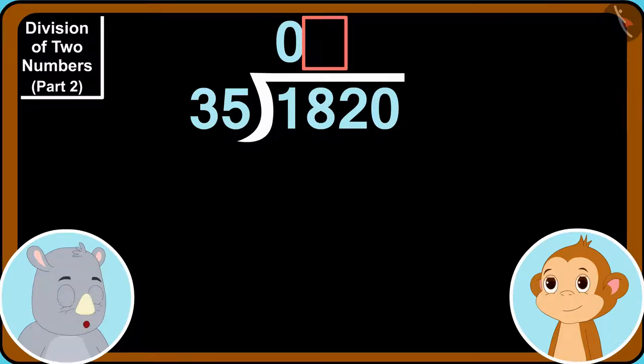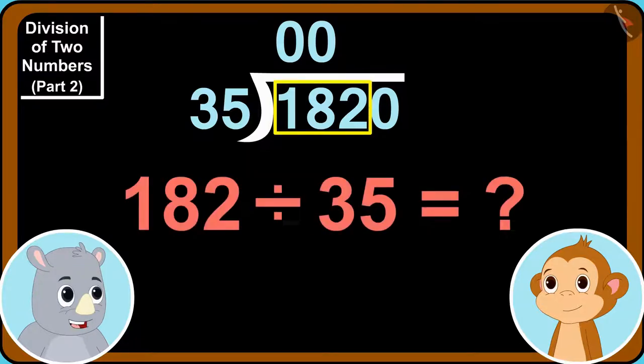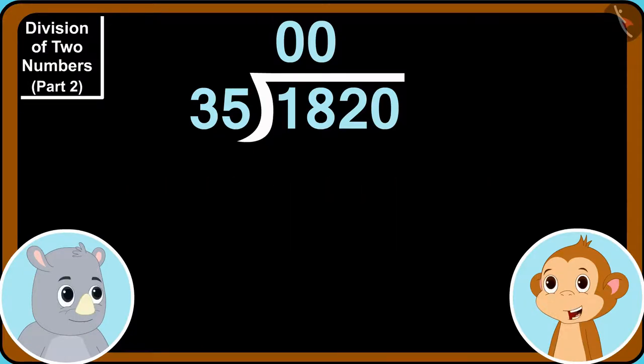We will write one more zero above. Now, can we divide 182 by 35? Yes.